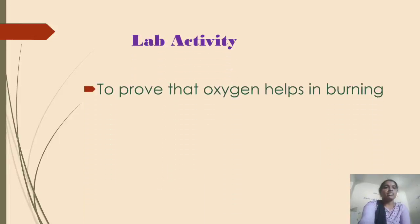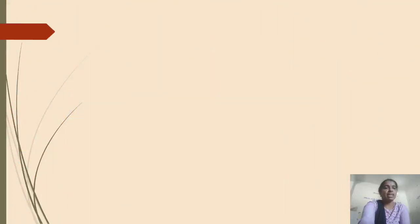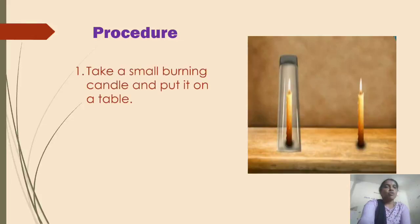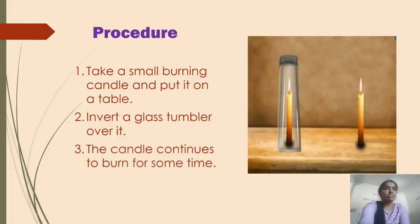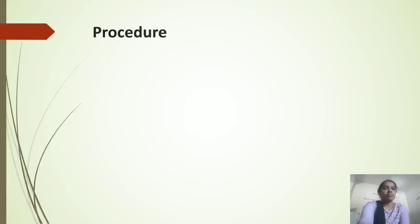So let's prove that oxygen helps in burning. To prove that oxygen burns material, the materials required are: a candle, a matchbox or lighter, and a glass tumbler or gas jar. Procedure: take a small burning candle and put it on the table. Take an inverted glass tumbler and place it over it, as you observe in the figure.